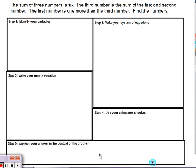So we have this word problem. The sum of three numbers is six. The third number is the sum of the first and second numbers. The first number is one more than the third number. Find the numbers.